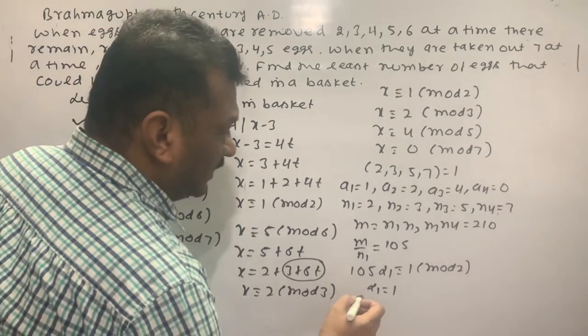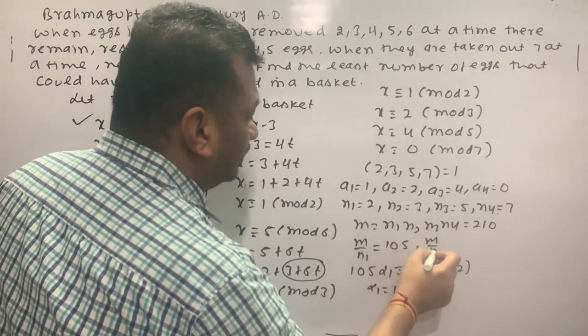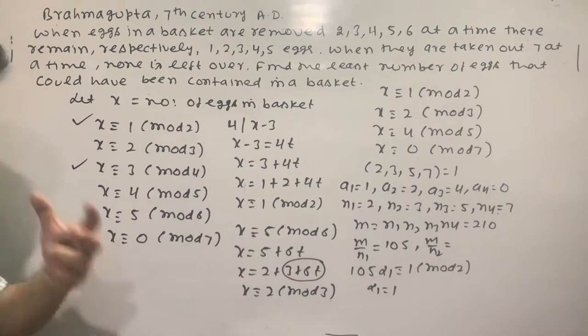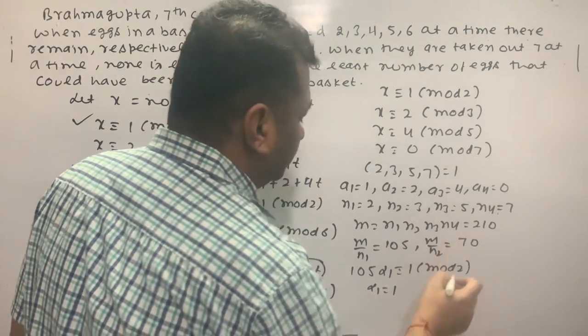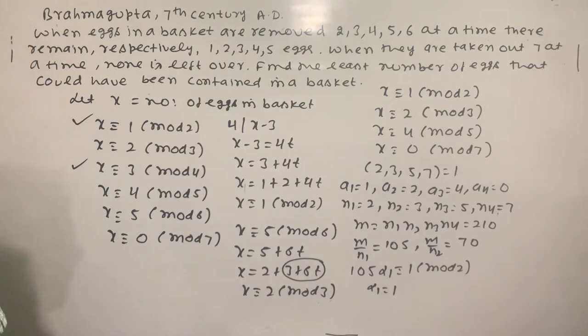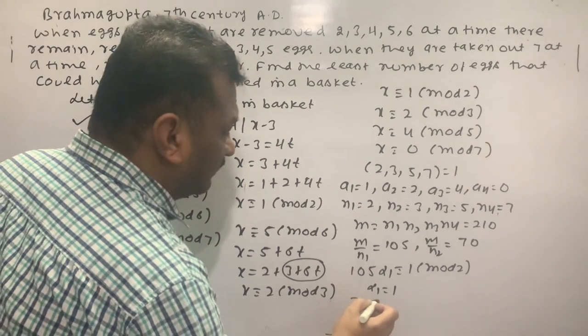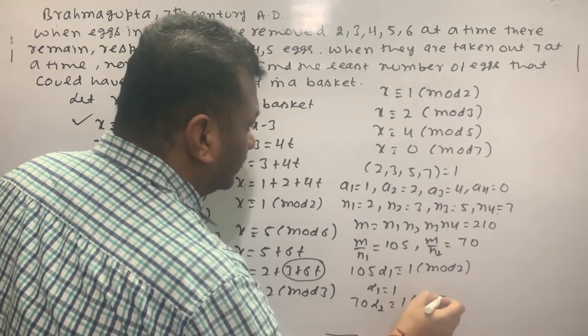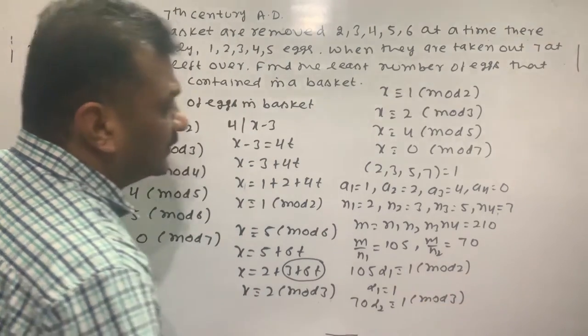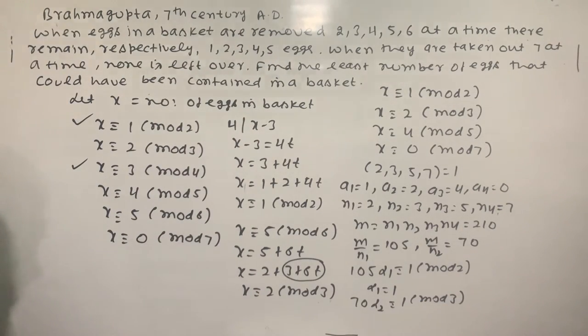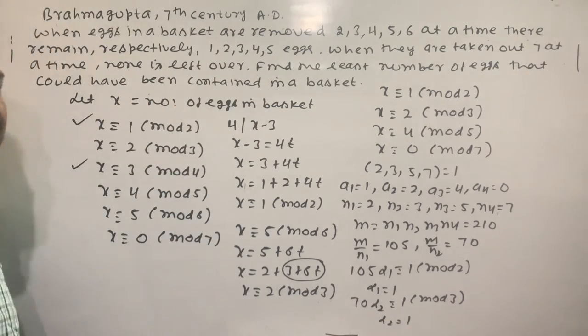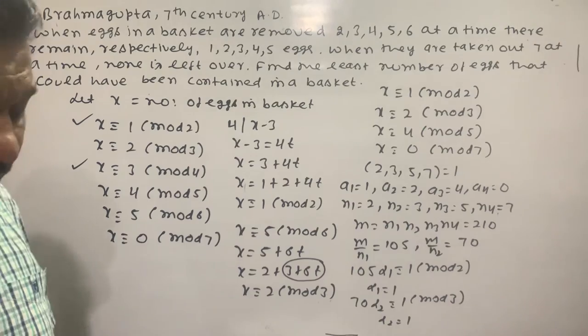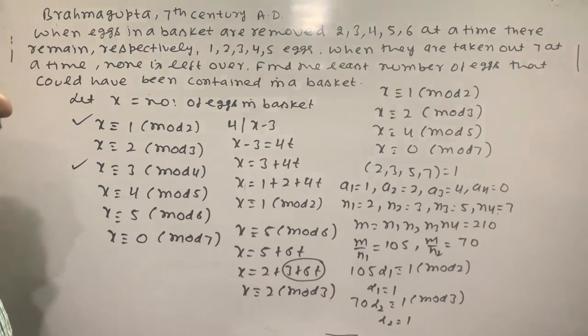Now M upon N2, M upon N2 is 70. 210 divided by 3 is 70. 70 times alpha2 ≡ 1 (mod 3). So here, alpha2 value is 1. That is 70 minus 1, 69, 69 divided by 3.